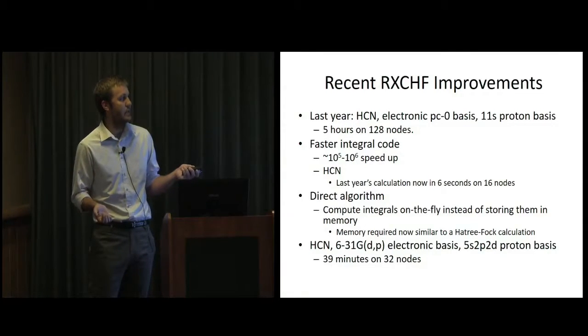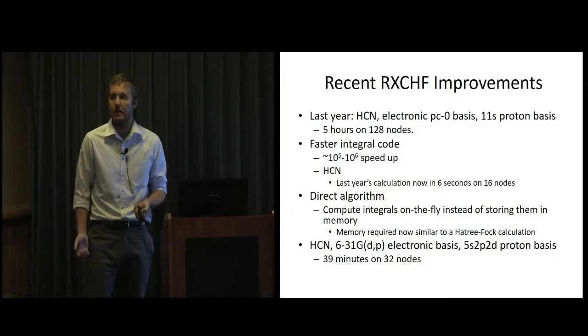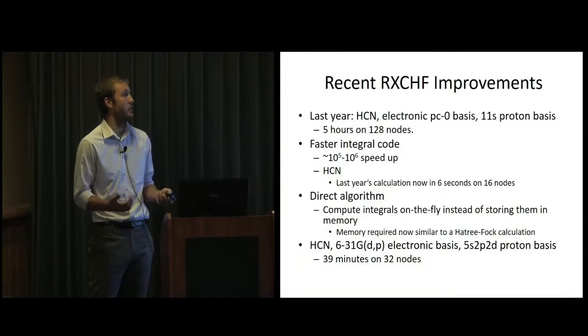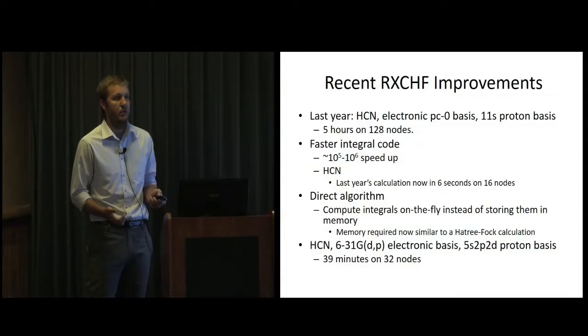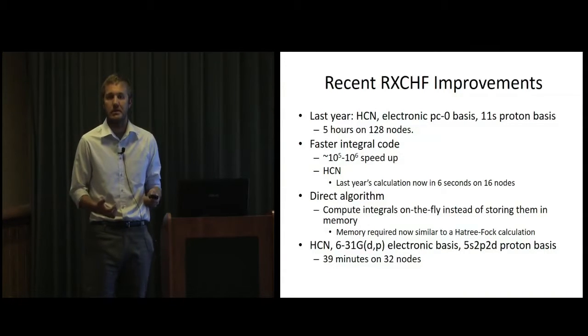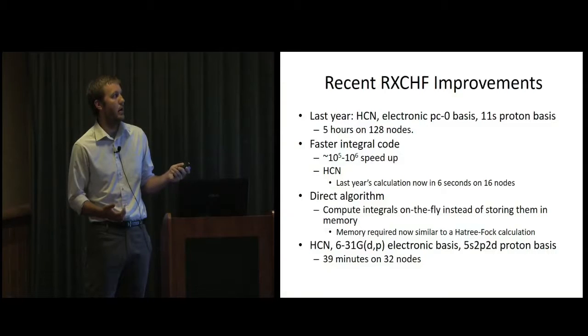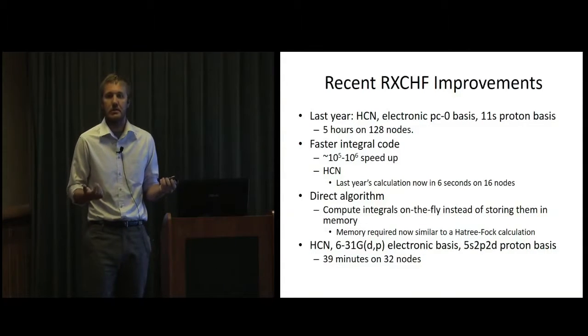So now for something like HCN, 6-31G** basis, 5s, 2p, 2d proton, I can do about 40 minutes on 32 nodes. And there's no reason we can't go larger than that. So that's been the main methodological improvement over the past year. And it's really enabled us to start looking at larger and larger systems to where we really couldn't do a lot a year ago just because of computational expense.